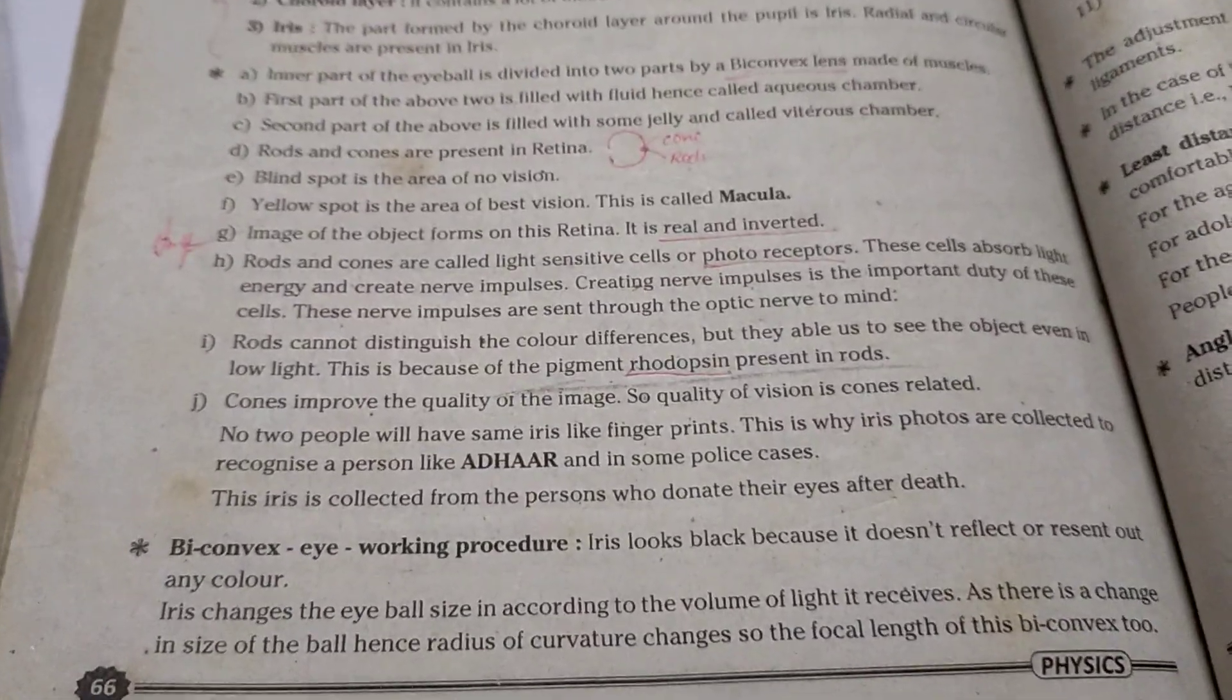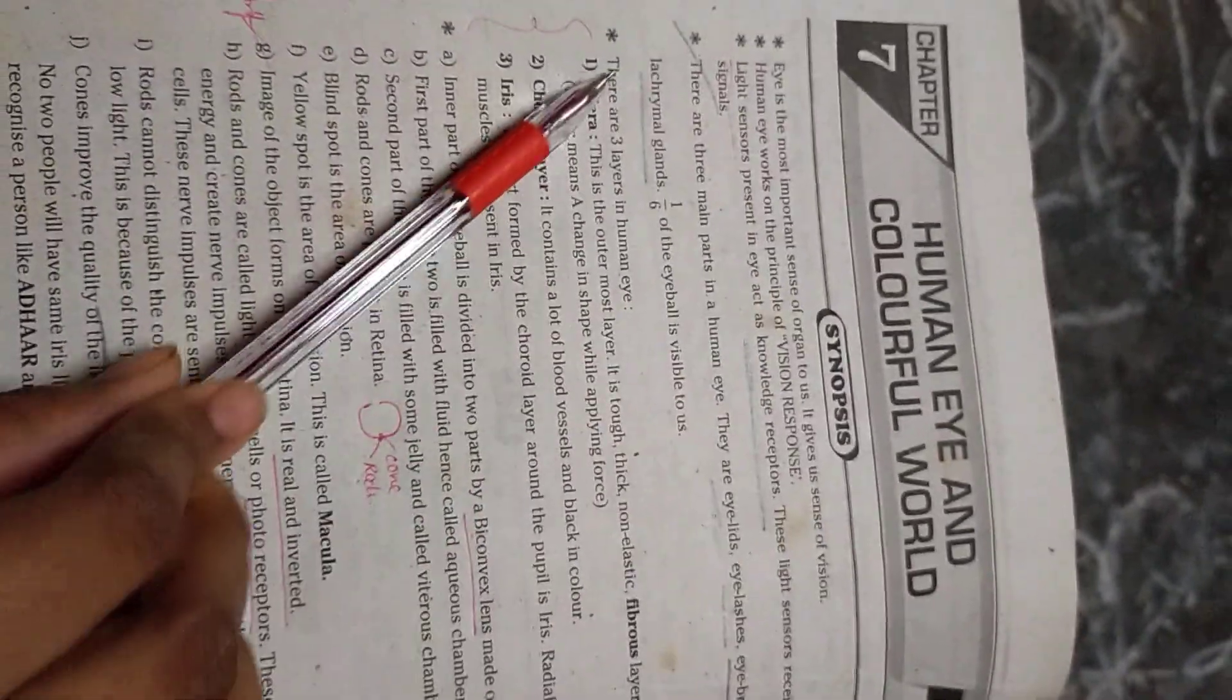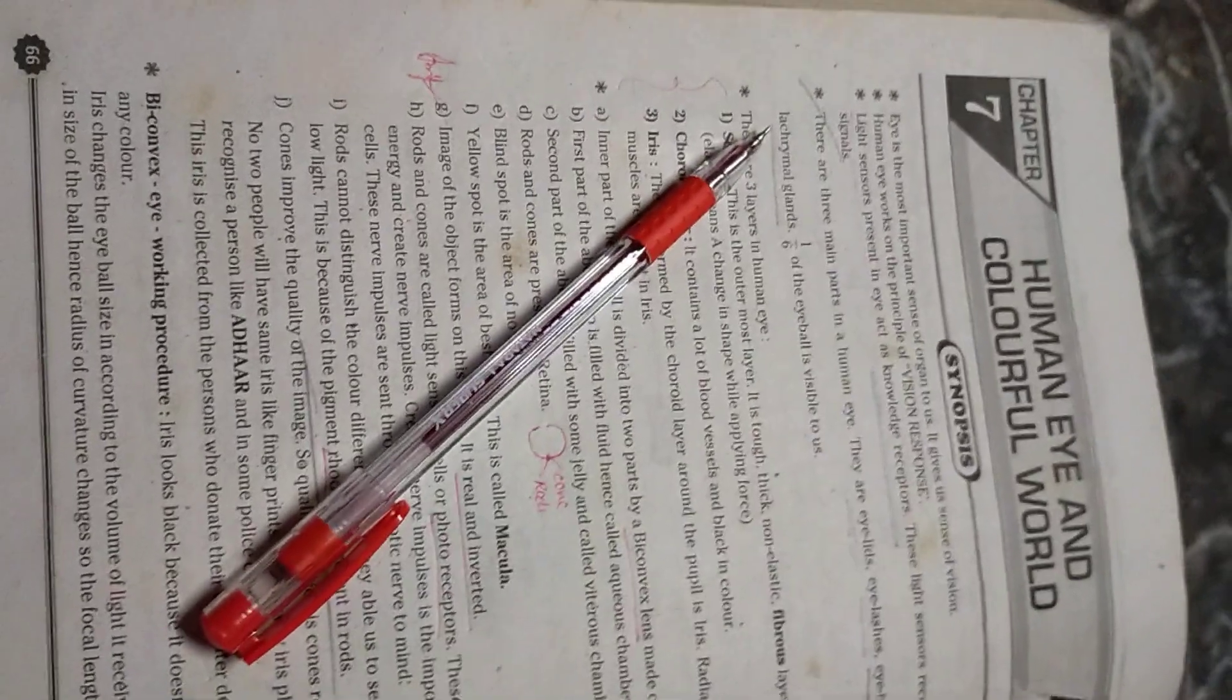So I think you have understood this topic today. It's the part one of the human eye and the colorful world. I'll tell you the part two also. Until then subscribe my channel please.